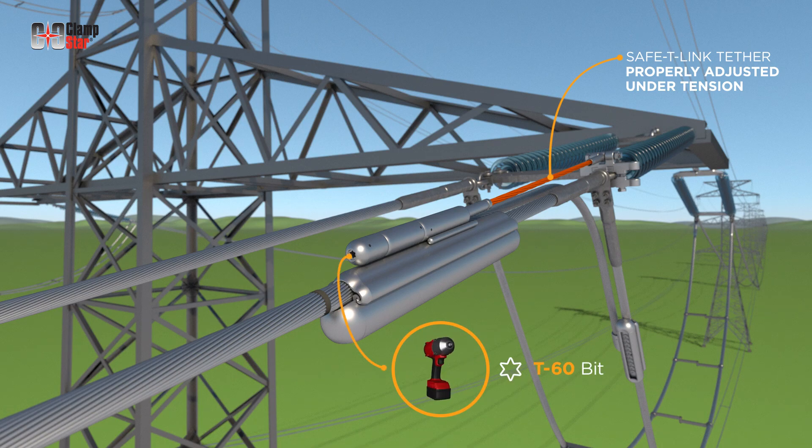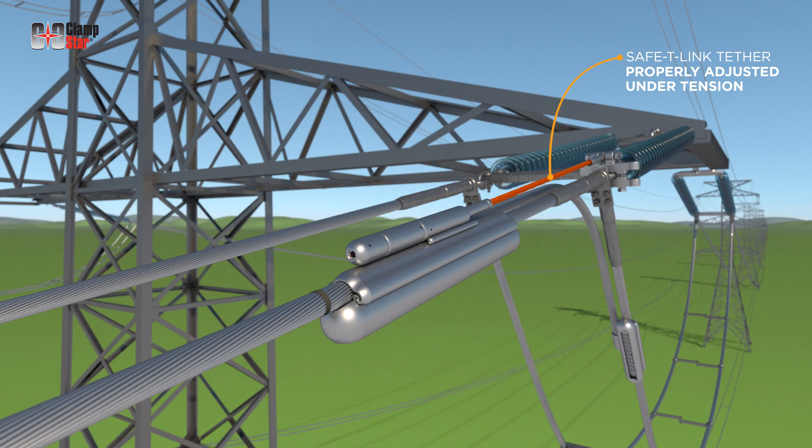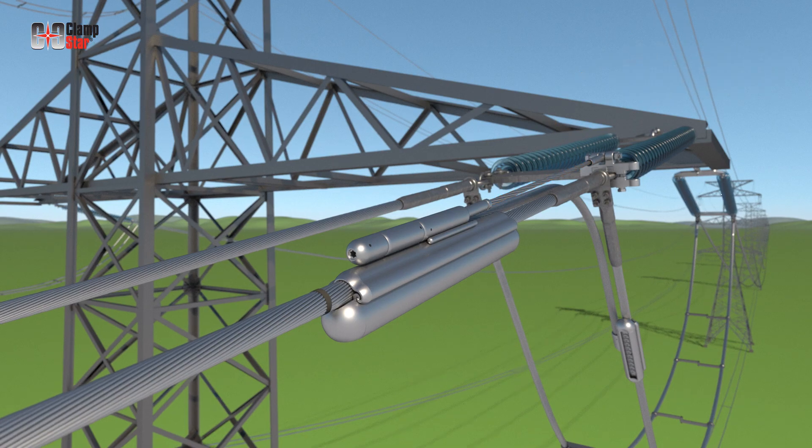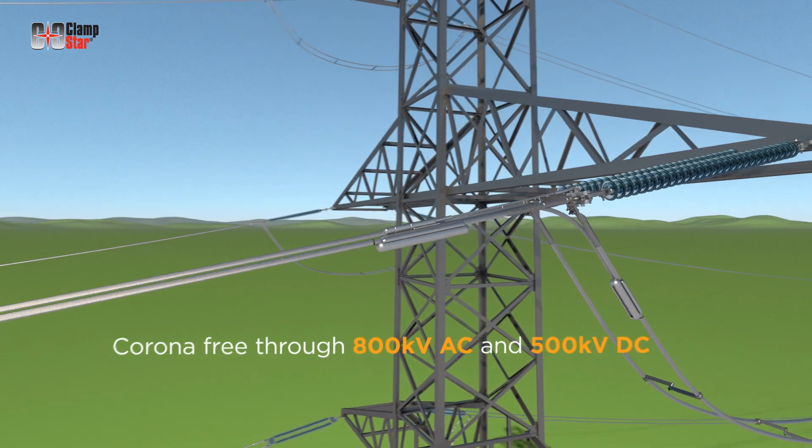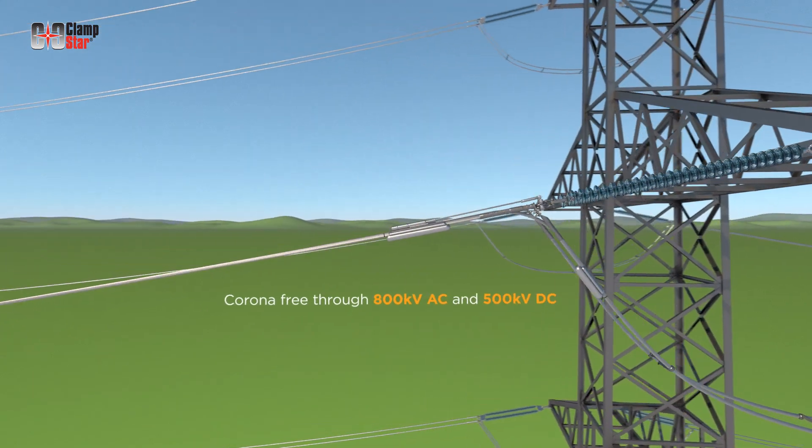If a power driver is used on this operation it will require a very light trigger finger. The tether nut can be tightened with hand tools with the T60 bit or using a power driver. Do not over tighten. This dead end is now permanently corrected and corona-free through 800 kV AC and 500 kV DC.